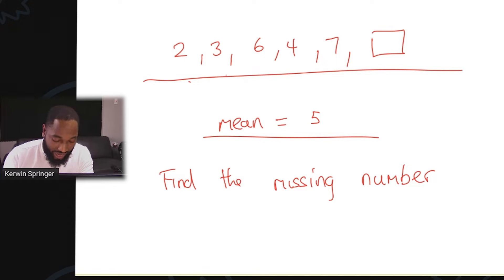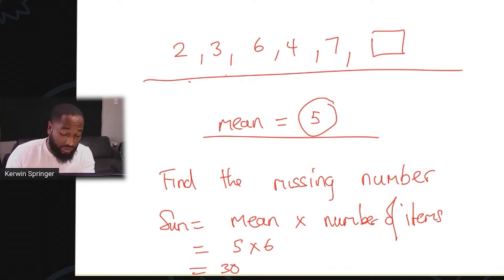In this question, the idea behind this is that you're always multiplying the mean by the frequency, by the number of data items we have. How much do we have? We have six. So the sum of all the items is going to be the mean times the number of items. So we're going to end up with 5 times 6 is 30, because all of this should add up to give me 30.